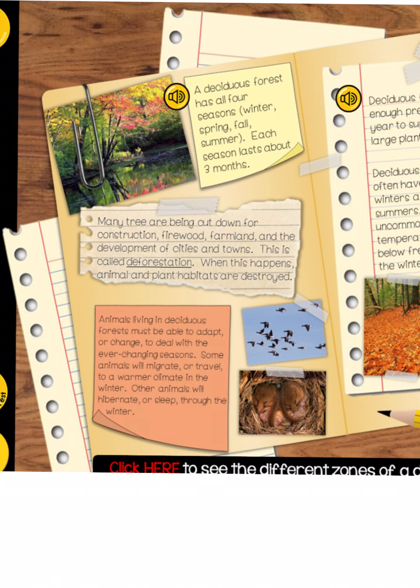A deciduous forest has all four seasons: winter, spring, fall, and summer. Each season lasts about three months. I can already see some key words that I could take from the text and put them into my t-chart.